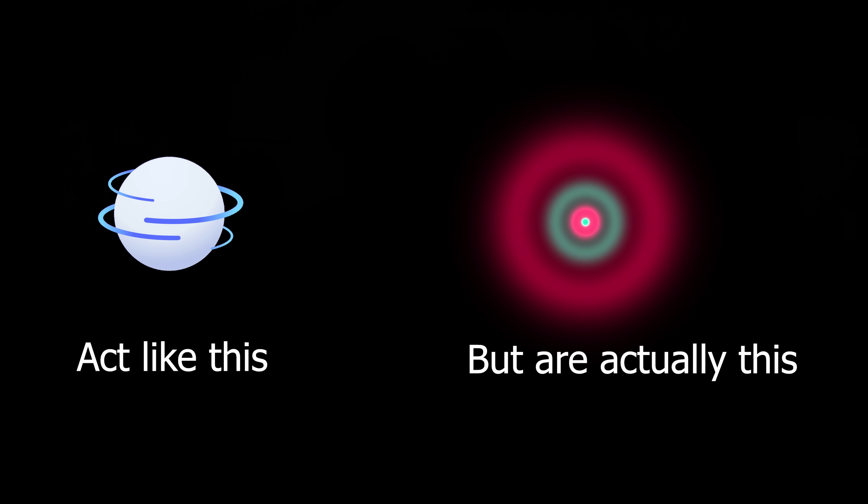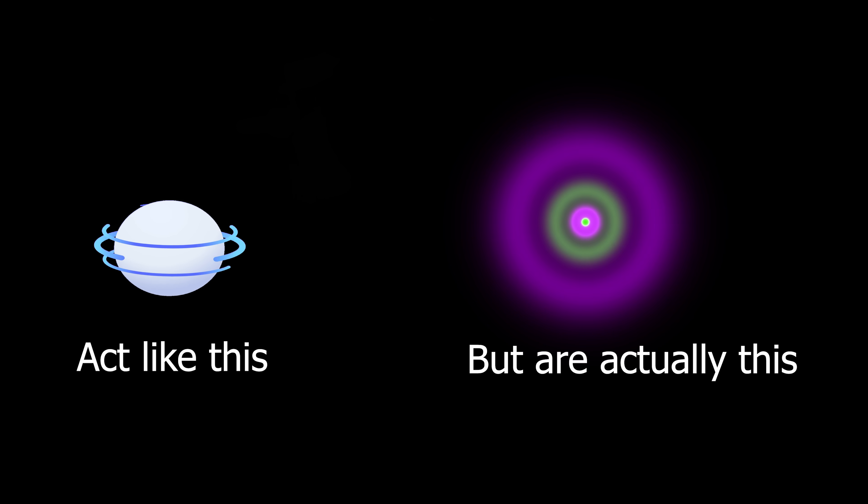Clearly something was wrong with the classical idea of an electron physically spinning. To reconcile this, scientists introduced a new concept, intrinsic angular momentum. Electrons don't actually spin, but they interact with the world as if they do.